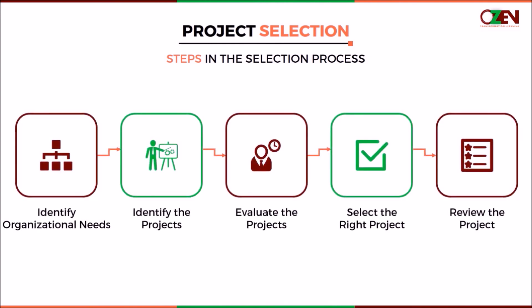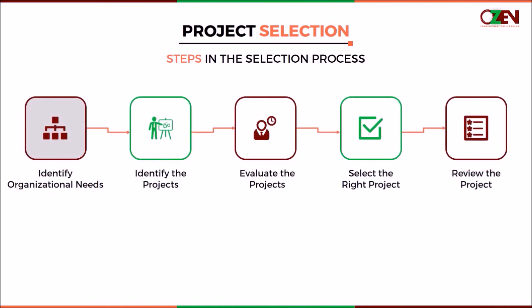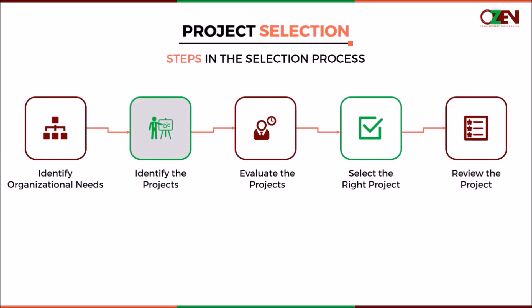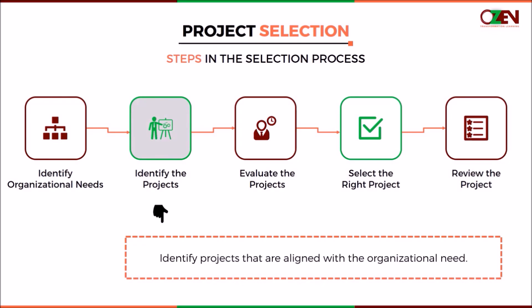In the first step, Identify Organizational Needs, methods such as BSC or other strategic planning tools are used by an organization to define its organizational needs. An organization needs projects to improve and develop its functional areas and to meet customer needs. Projects need to be aligned to the organization's key business objectives. Capturing baselines, or current state performance, and benchmarking are the activities that help find project opportunities.